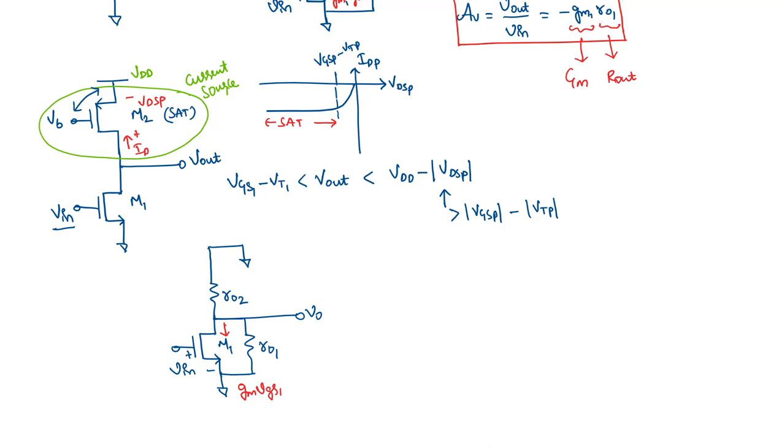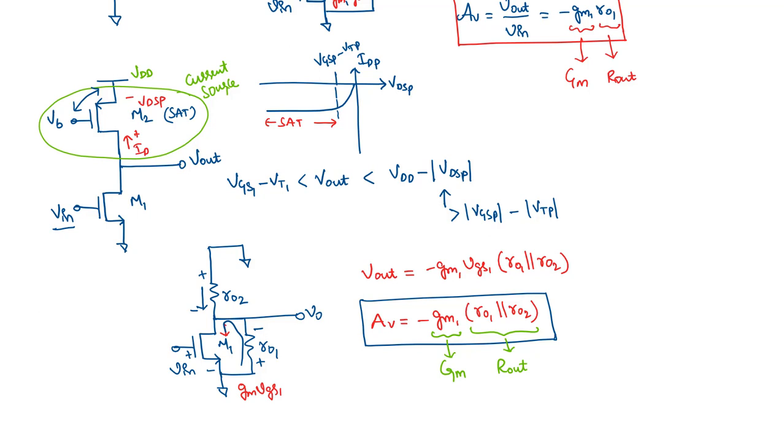Now, this Gm times VGS1 current is actually coming from both the sides, this side as well as this side, making it positive on this side, negative here, positive, negative here. So, the output voltage Vout will be equal to minus Gm1 times VGS1 times R01 in parallel with R02. So, we can say the voltage gain of this stage is minus Gm1 times R01 in parallel with R02. So, from this, we can directly say that the overall transconductance of this stage is capital Gm and the overall output resistance is Rout, which is R01 in parallel with R02.